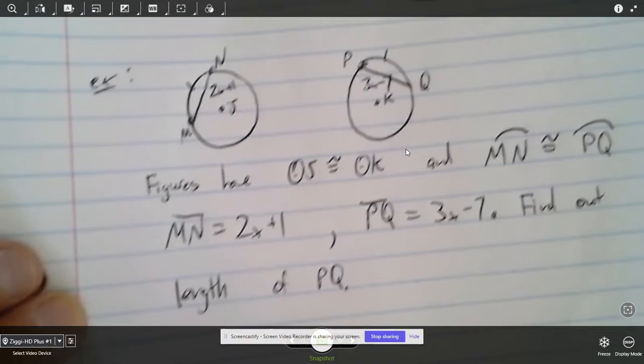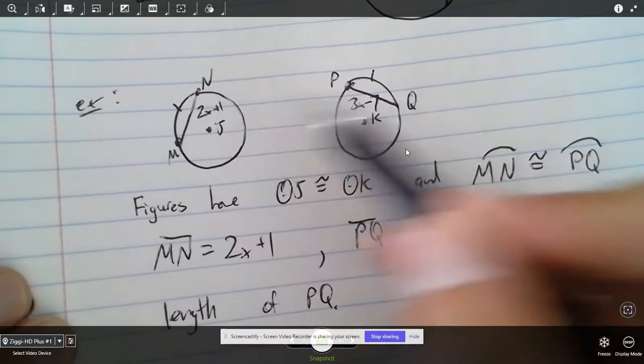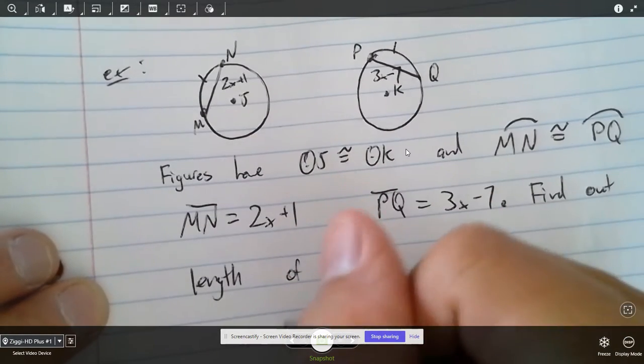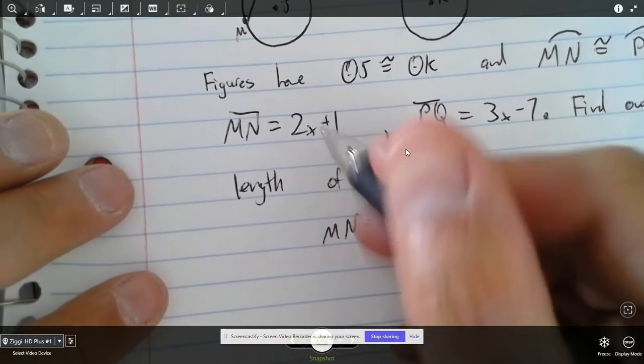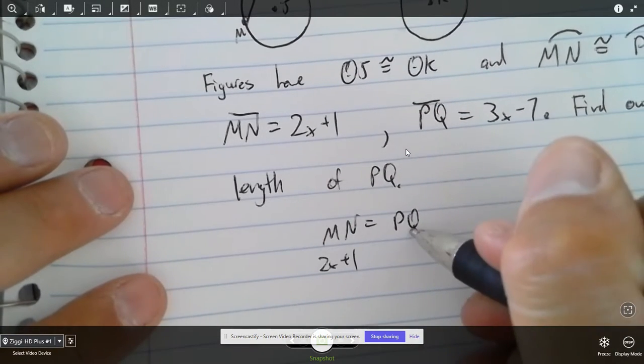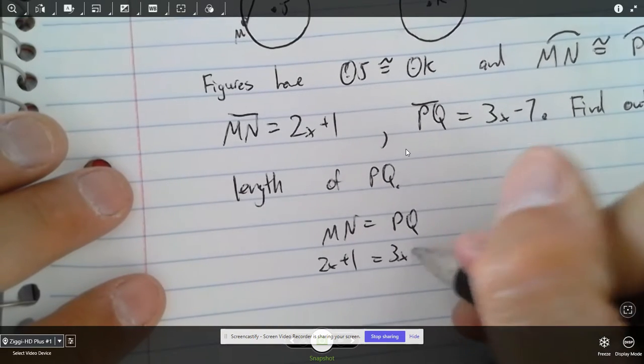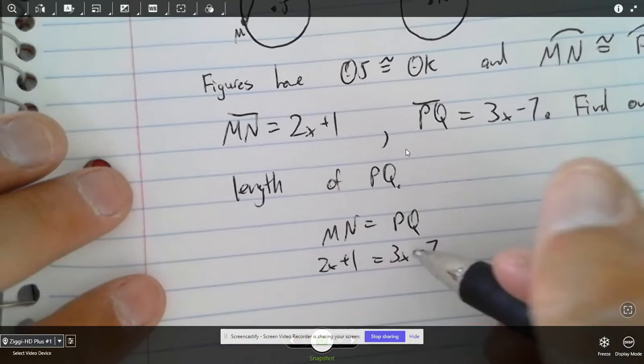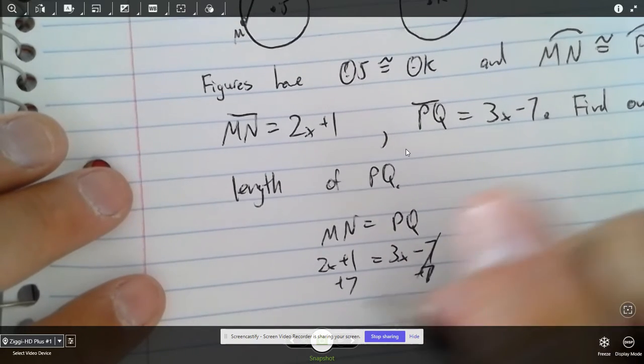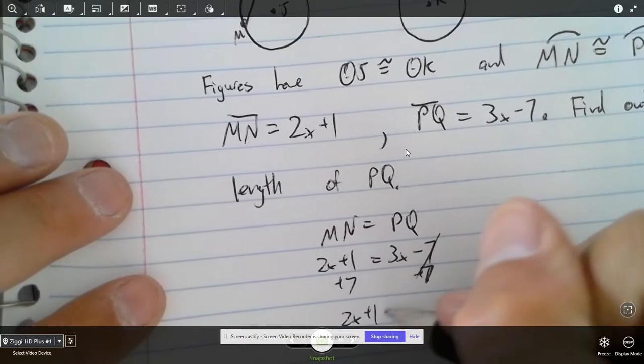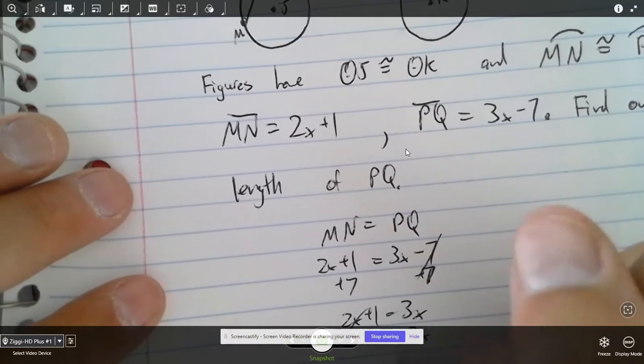If we know that MN and PQ are congruent, then guess what? Their chords are congruent as well, so we set them equal to each other. So MN is equal to PQ. And we'll substitute in MN for being 2X plus 1. And then PQ is 3X minus 7. And then we're going to solve for an X value that makes both of these sides equal. Plus 7 to both sides, 2X plus 8 is equal to 3X, and I subtract 2X from both sides.